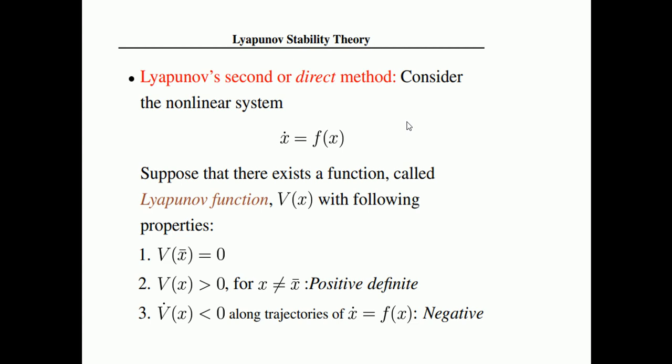Now comes the second method, which is a very popular method and essential in modern control design. If you are designing controllers and need to write a research paper, you need to prove the stability of the controller with this method. Consider the nonlinear system x-dot equals f(x). Suppose there exists a Lyapunov function V(x) — this is an energy-like function and it must be dissipating — for the system to be stable.